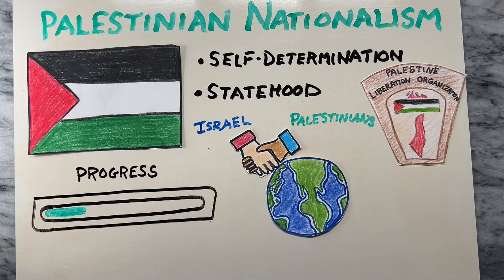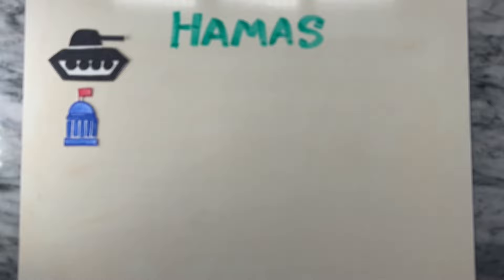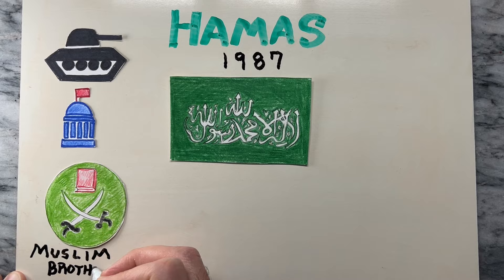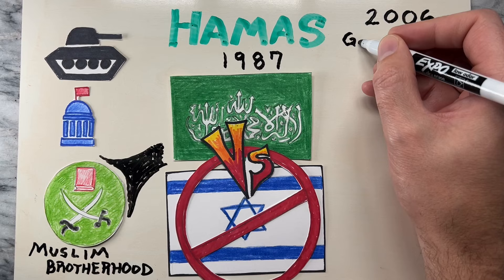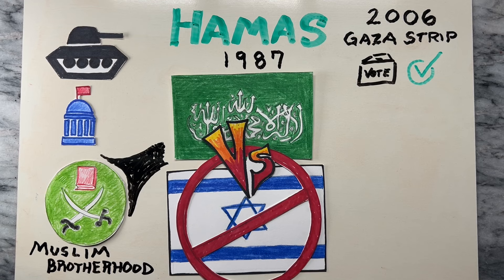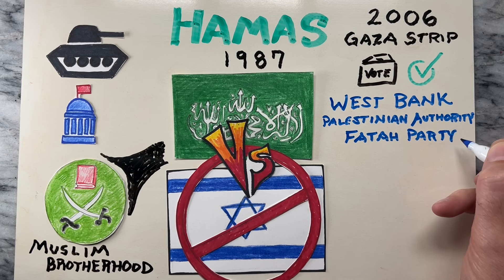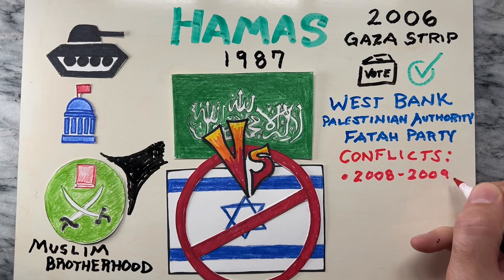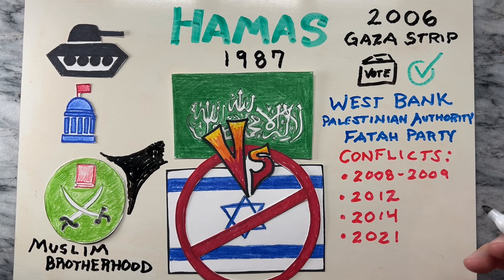How does Hamas play into this? Hamas is a Palestinian militant and political organization founded in 1987. It emerged as an offshoot of the Muslim Brotherhood and opposes Israel's existence. In 2006, Hamas won legislative elections in the Gaza Strip and subsequently took control there, while the West Bank remained under the control of the Palestinian Authority, which is dominated by the Fatah Party. Hamas and Israel have engaged in multiple conflicts, including wars in 2008 to 2009, 2012, 2014, and 2021, resulting in significant casualties and damage.